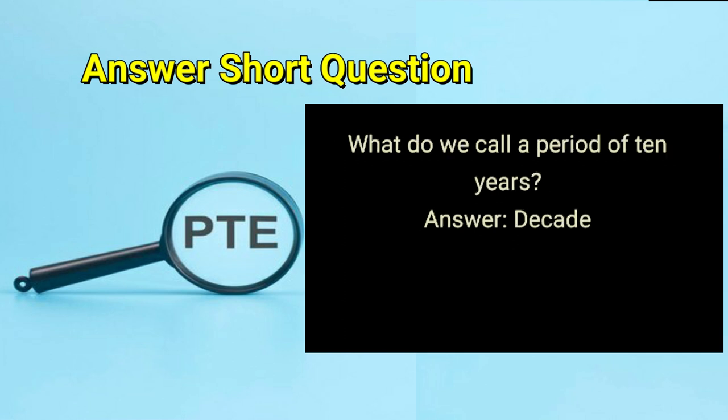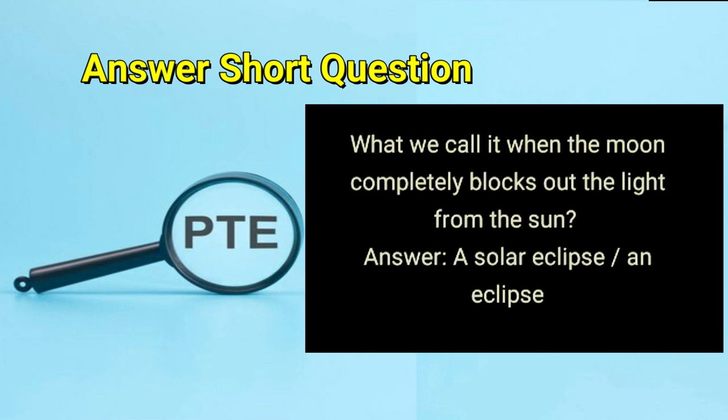What do we call a period of ten years? Answer: decade. What do we call it when the moon completely blocks out the light from the sun? Answer: a solar eclipse or an eclipse.